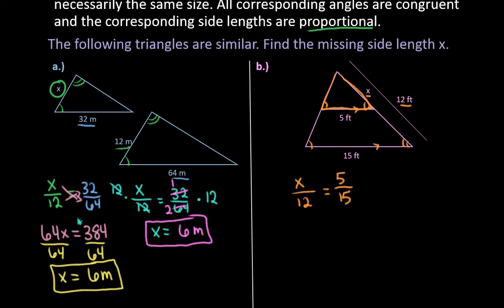So again, you have the choice of whatever makes more sense to you. You can cross-multiply, so I can say that 15x is equal to 60, and then I can divide both sides by 15, and I end up with x equals 4 feet.